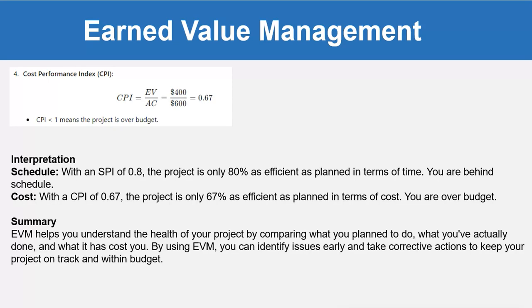Remember, with an SPI of 0.8, the project is only 80% as efficient as planned in terms of time — you are behind schedule. With a CPI of 0.67, the project is only 67% as efficient as planned in terms of cost — you are over budget. EVM helps you understand the health of your project by comparing what you planned to do, what you have actually done, and what it has cost you. By using EVM, you can identify issues early and take corrective actions to keep your project on track and within budget.